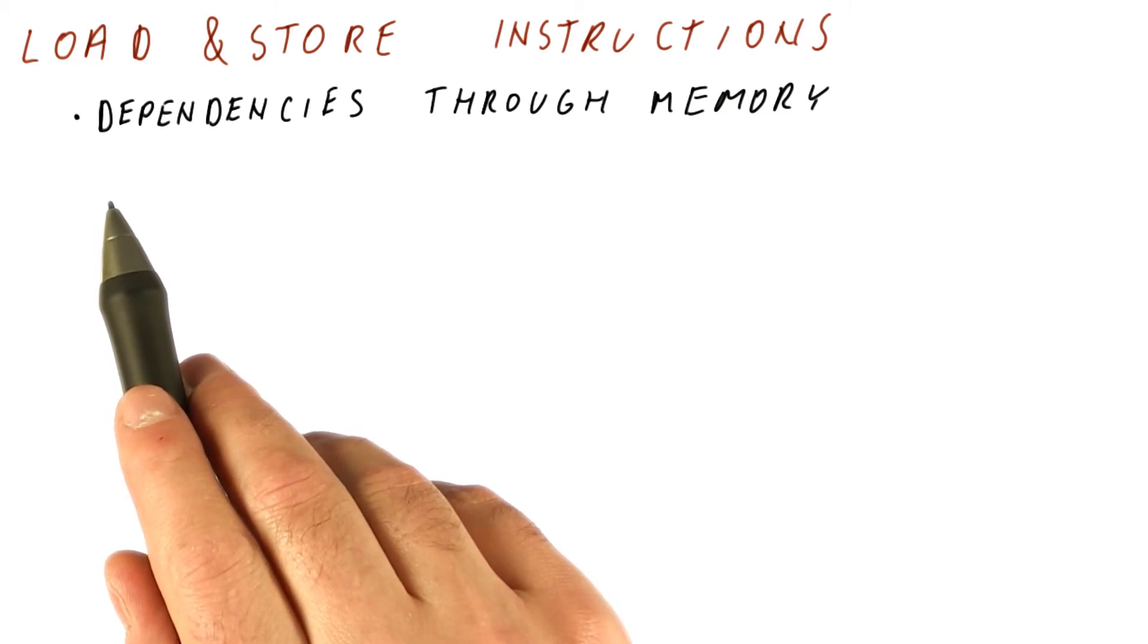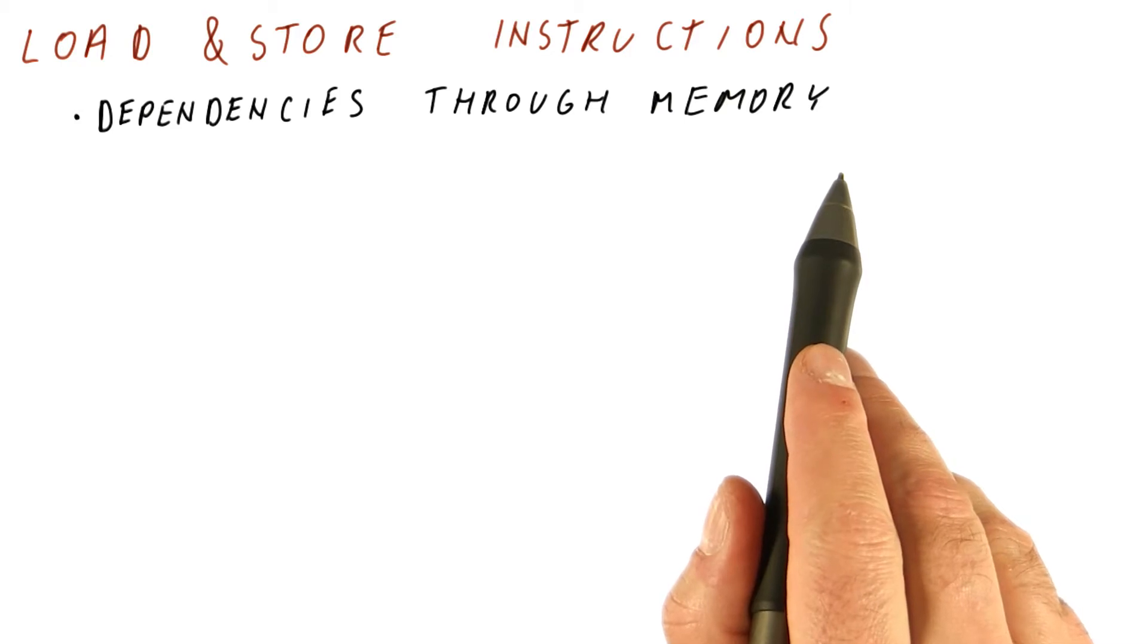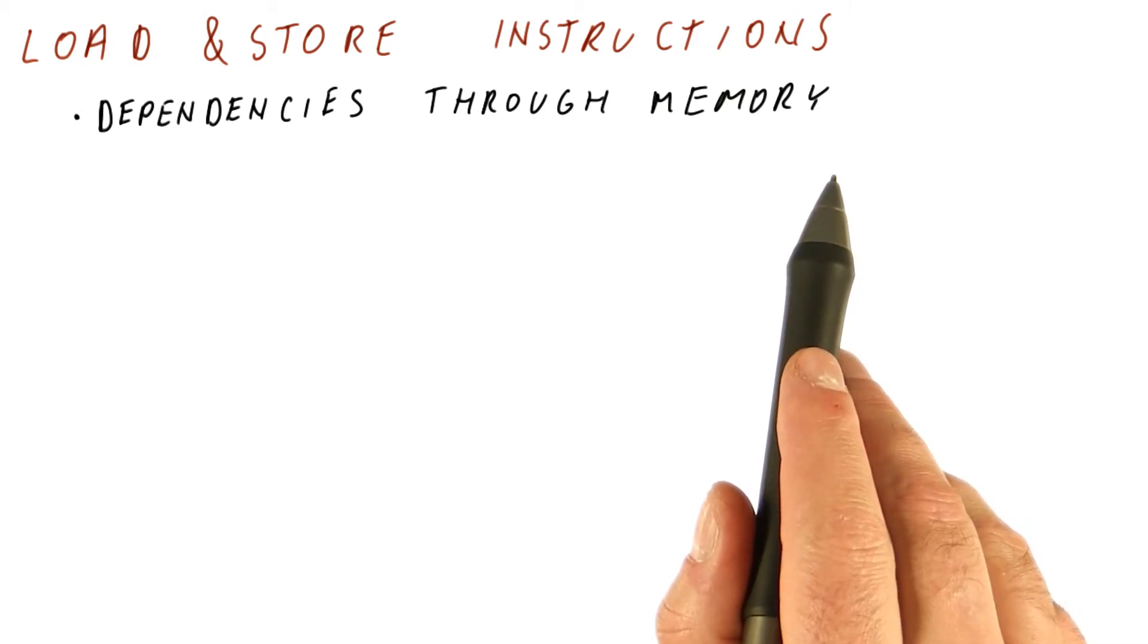doing these reservation stations in order to properly obey the true dependencies. There can be dependencies through memory because loads and stores are the only instructions that can have dependencies through memory.